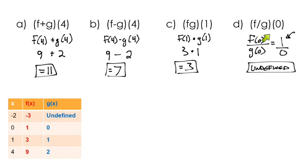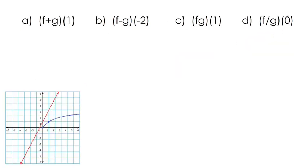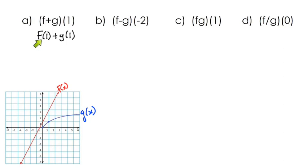Now we've looked at all four function operations using a table. Let's look at how to do those same operations using a graph. The concept is basically the same — the red function is f of x and the blue function is g of x — but instead of the table handing us values, we have to interpret the graph. For f plus g of 1, that means f of 1 plus g of 1, so we need the value of f when x is 1.